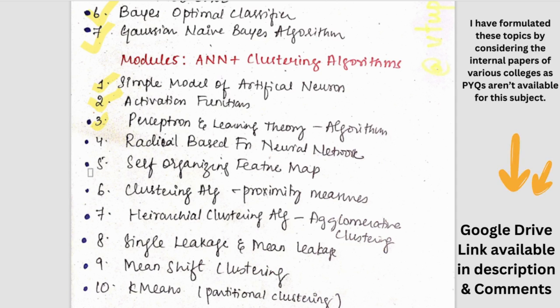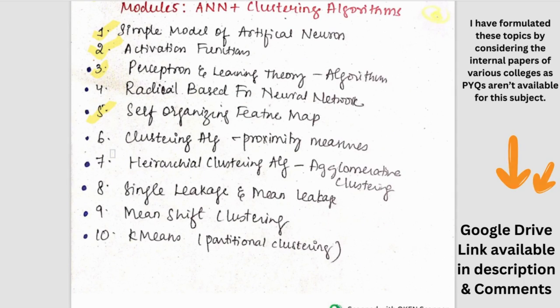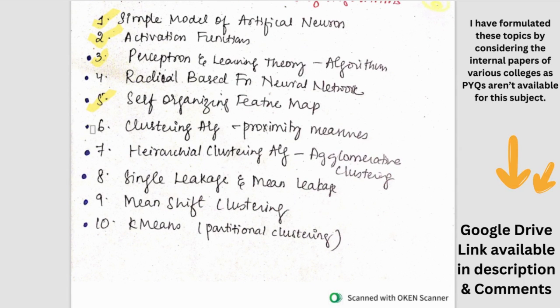And then we have self organizing feature map. This could be asked. And then clustering algorithms. This is important - difference between clustering and classification could be asked. And then types of clustering, advantages, disadvantages could be asked. Proximity measures also important. Then we have the hierarchical clustering algorithm and we have the mean shift algorithm. And then in partitional we have k-means.